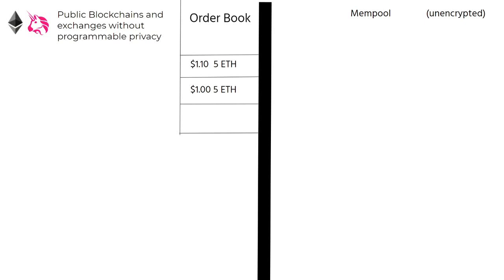Let's give a simple example of what front-running looks like on a publicly visible blockchain such as Ethereum, where the mempool of potential transactions aren't unencrypted. To properly illustrate this example, we will be using an extremely illiquid and thin orderbook.